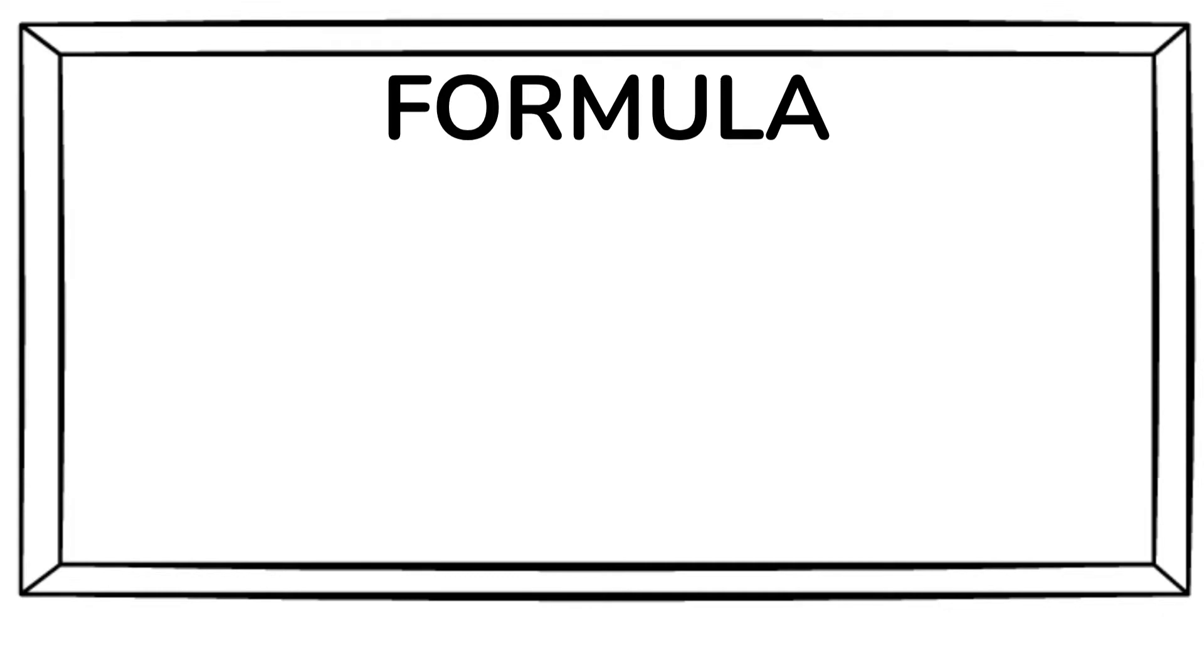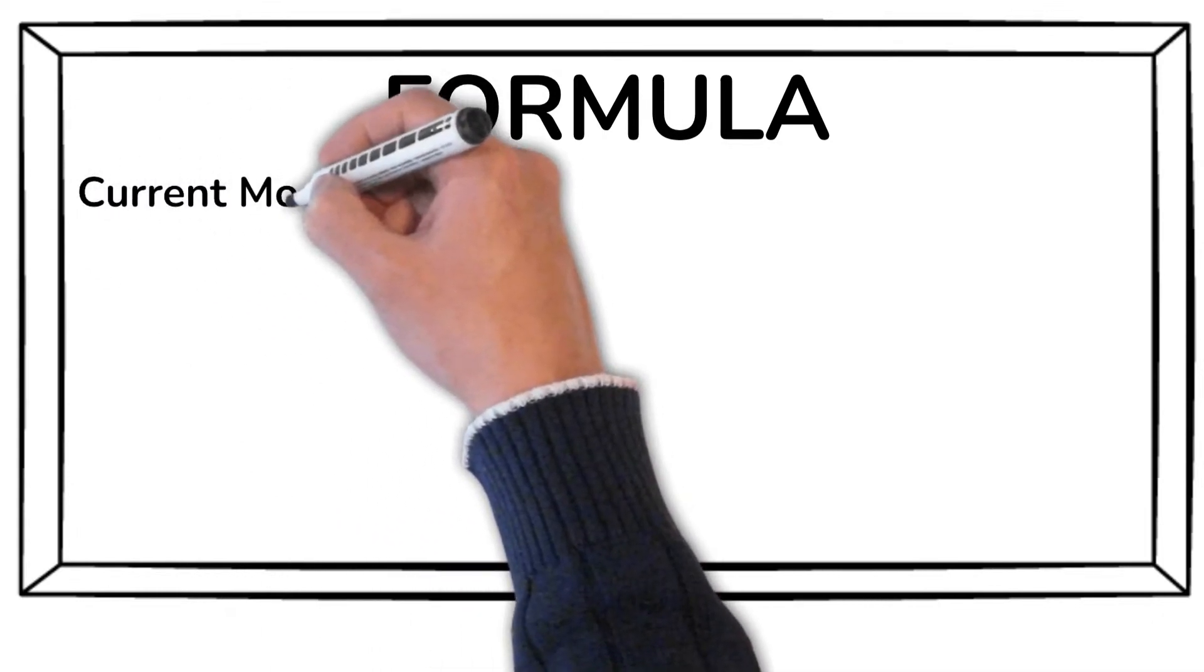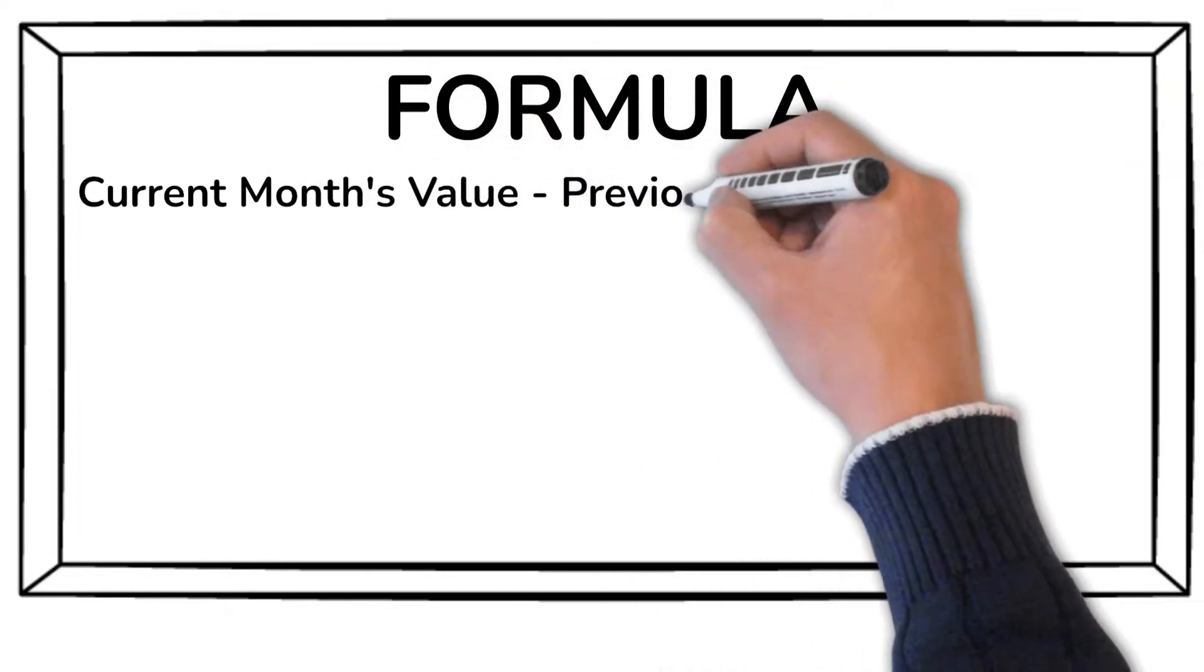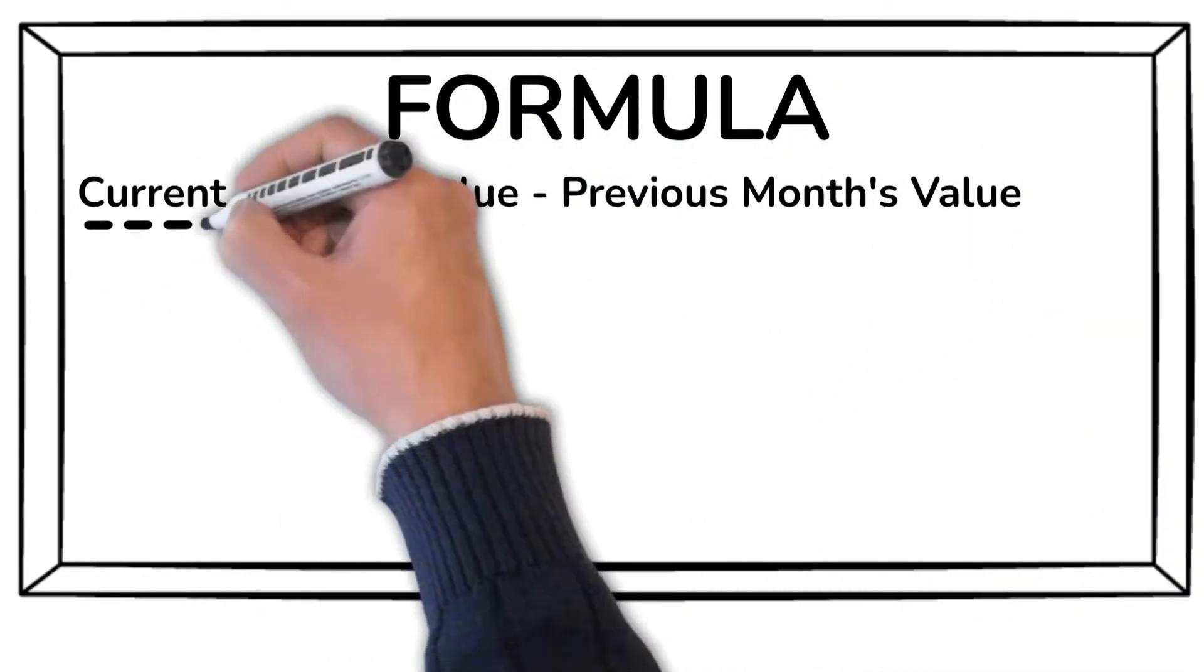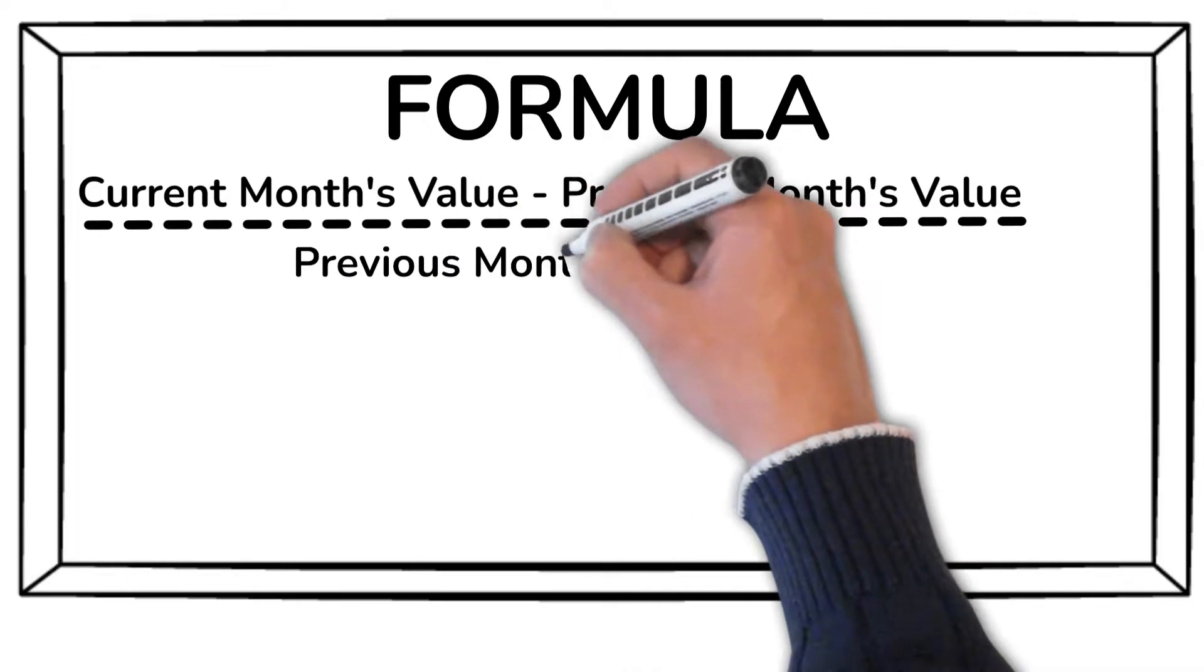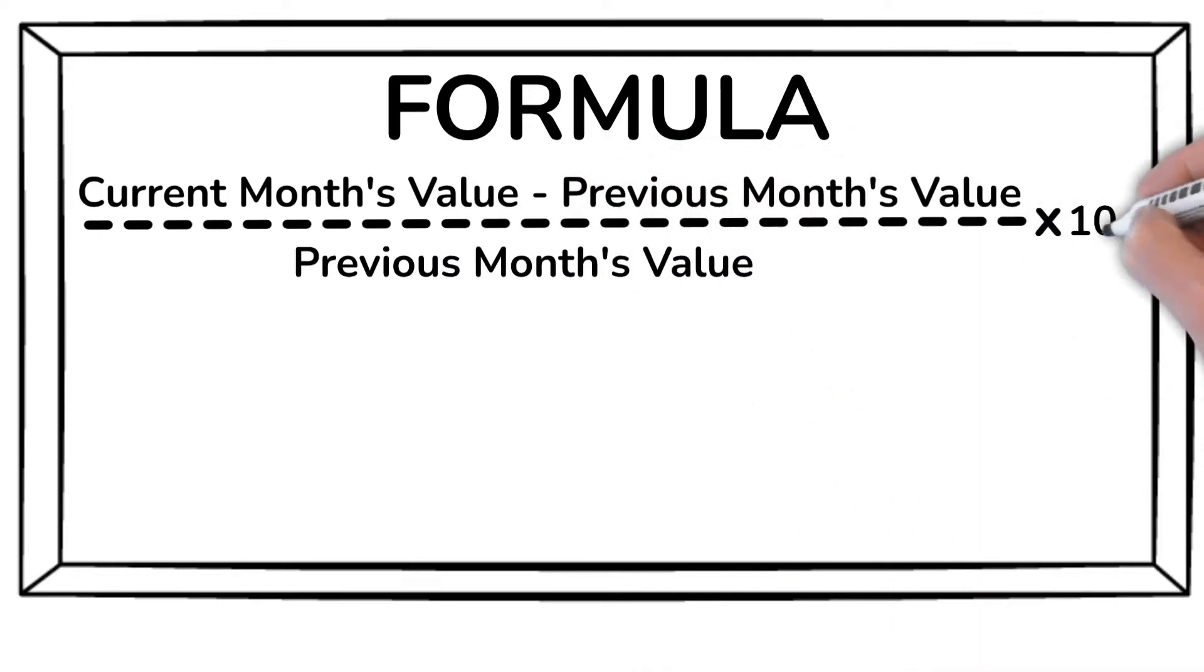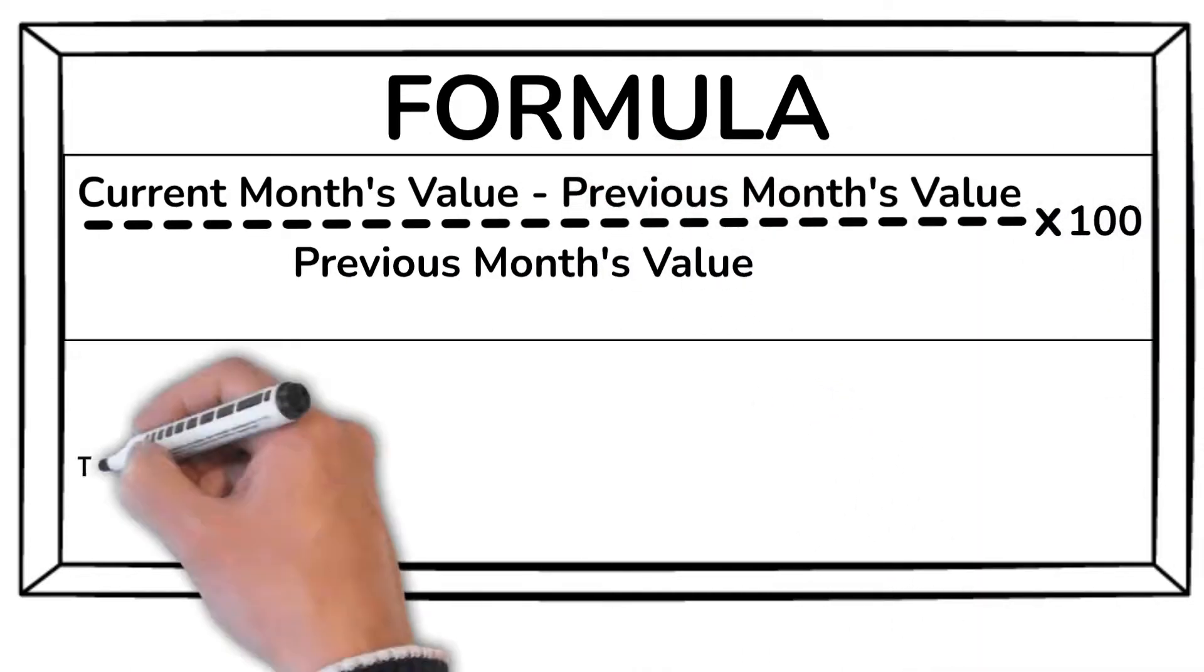To calculate month-over-month growth, we subtract the previous month's value from this month's value, then divide the result by the previous month's value. We multiply it by 100 to express it in percentage terms.